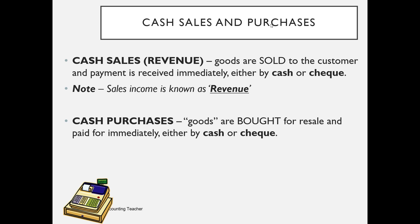These are goods that are bought for resale, and because they're cash purchases, we've paid for them immediately — either by cash, by check, by bank transfer, by credit card, or a whole host of other payment methods. The important thing is that we've paid for them at the time and the supplier hasn't allowed us any credit.